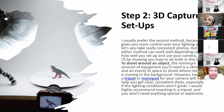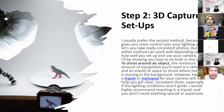I'll be showing you how to do both. To shoot around an object, the minimum equipment you'll need is a camera and an evenly lit space. You should ensure nothing is moving in the background. Having a tripod or monopod will really help you get clear, consistent shots, especially if the lighting conditions aren't great. I highly recommend investing in a pod; you don't need anything special or expensive. Monopod tidak harus yang fancy, kita bisa gunakan tali yang dibuat manual, yang penting bisa tetap diam di satu titik dan menghasilkan foto yang cukup baik.